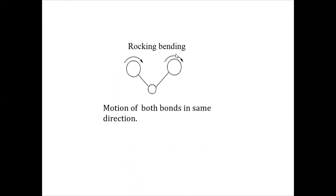Now, rocking vibration. If motion is happening on both atoms in the same side direction — either both moving to the left side or both moving to the right side — this type of motion looks like rocking. These bending vibrations are known as rocking bending vibrations.